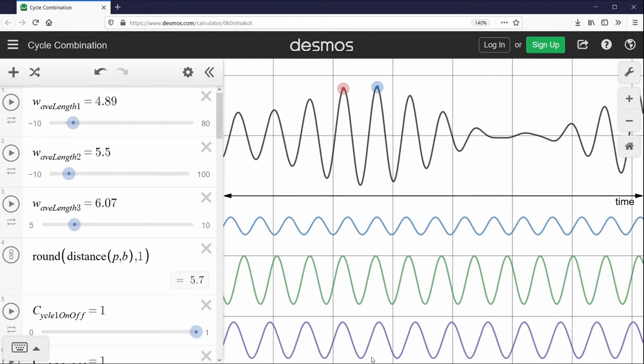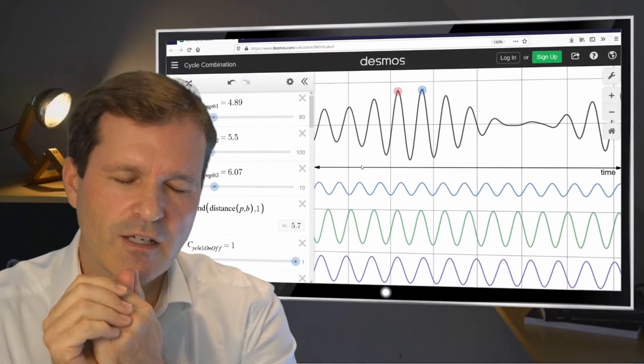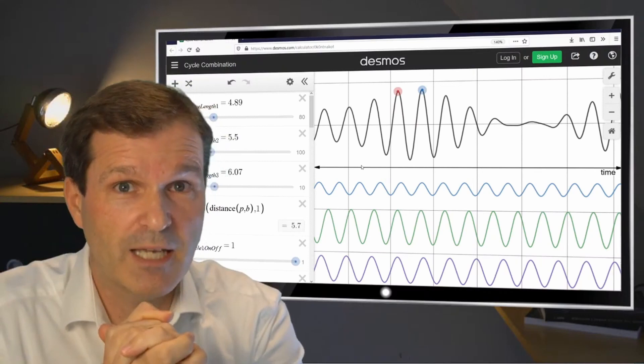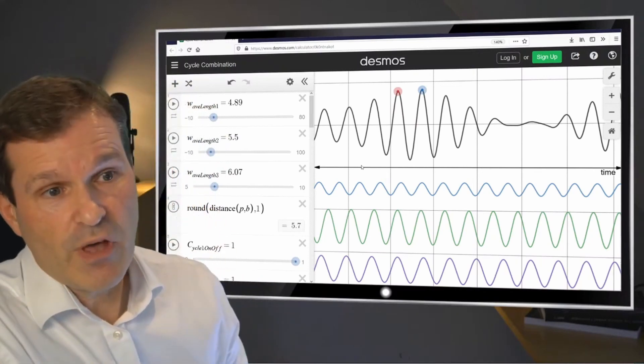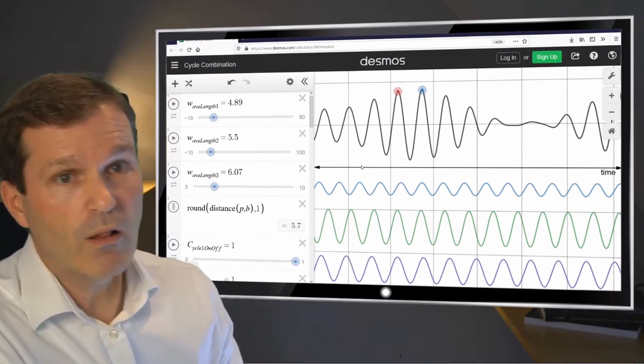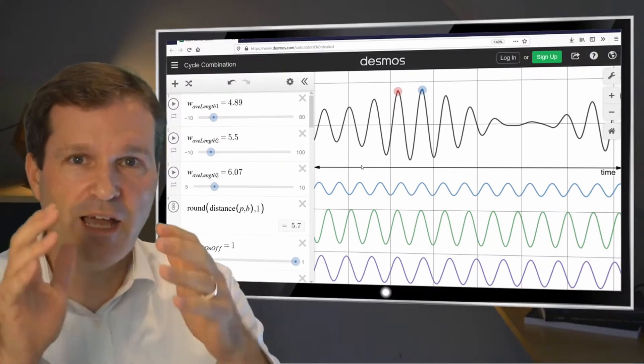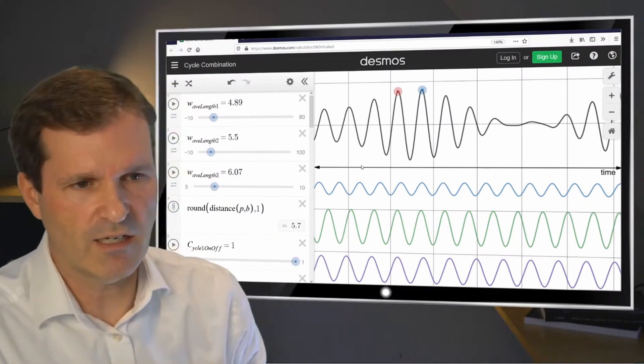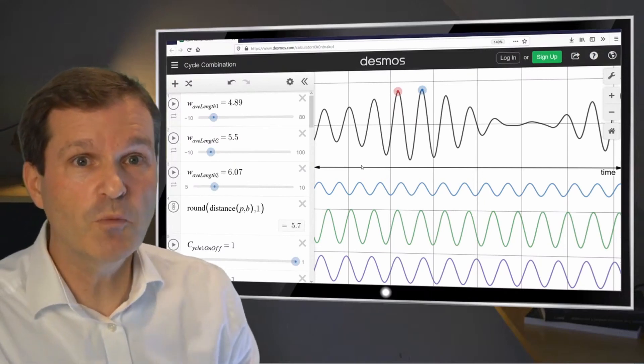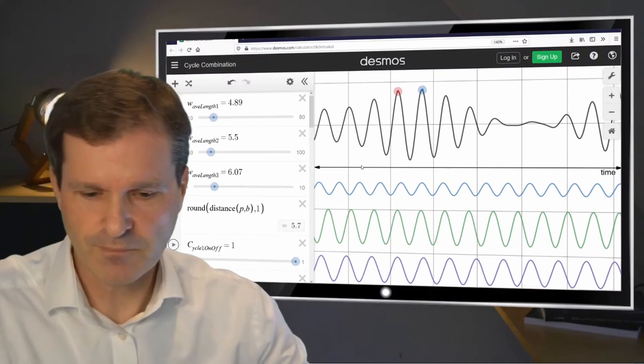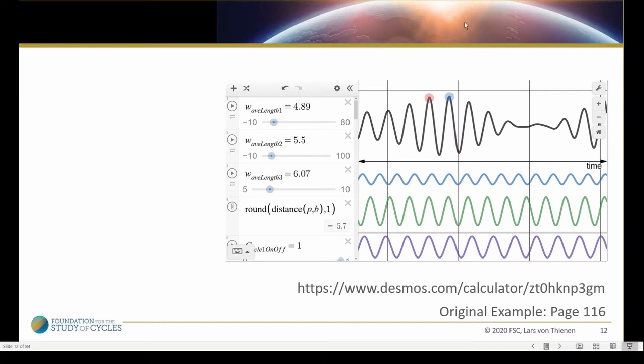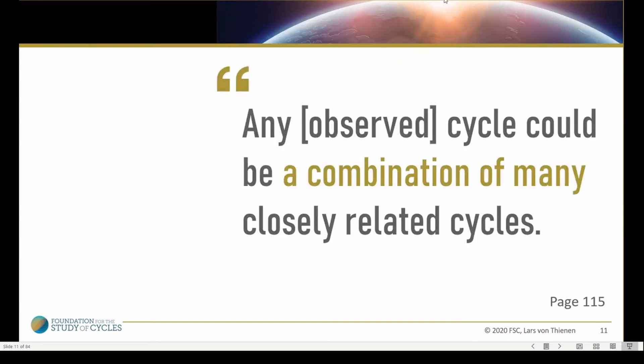Take away number one for this session: whenever you see or observe a cycle or think about 'I have now found a cycle,' check for yourself. Have you validated if this might be a false cycle? What tools do you use to validate if you have a false cycle? Because we are all, and this includes me also, falling in love with the observed cycle and then doing some projections. Before you do that, check yourself, use additional tools. The observed cycle could be a combination of many closely related cycles.